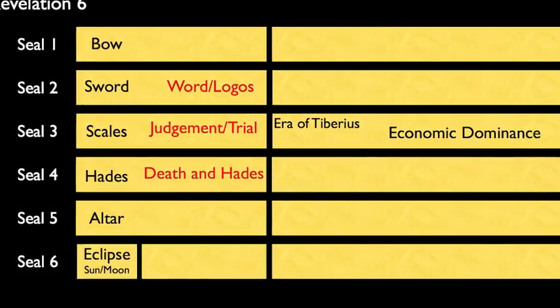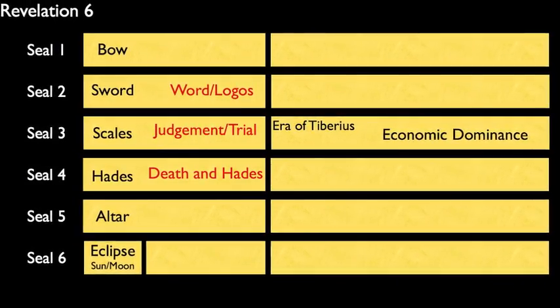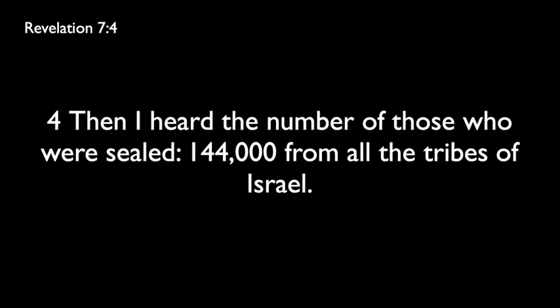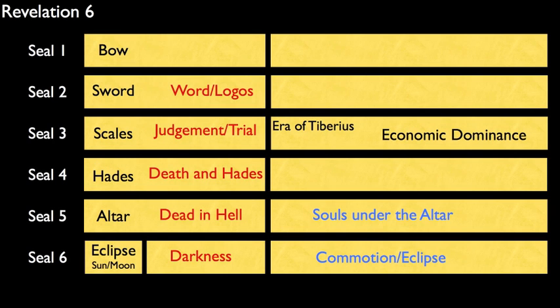At this time, I'd like to mention the last two seals. Seal 5 only talks about the souls under the altar — these are dead people in hell. Seal 6 talks about a commotion; this is the eclipse itself. And finally, in chapter 7, we have the raising of the 144,000. These are the same souls under the altar from the fifth seal.